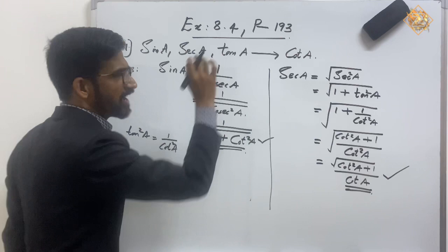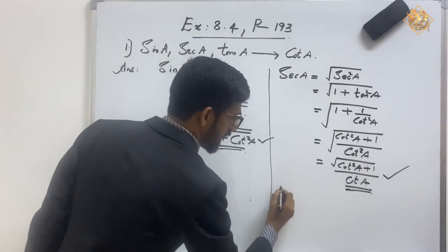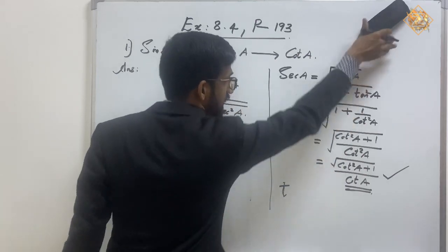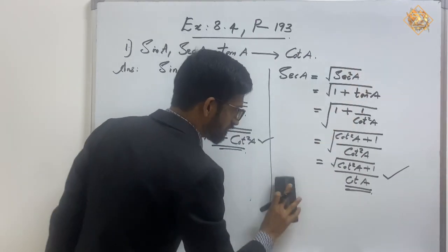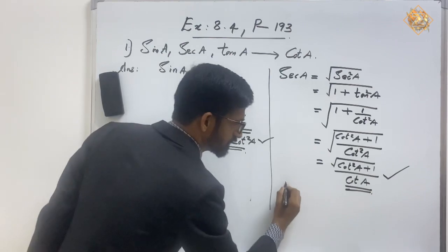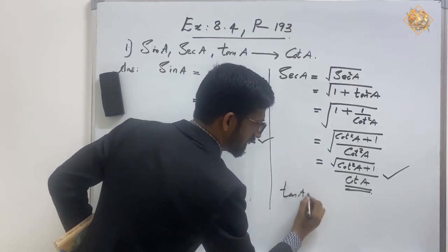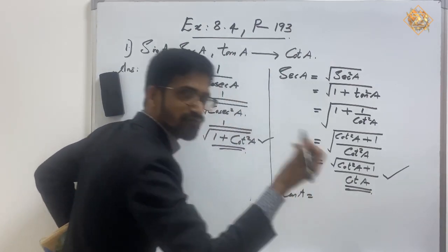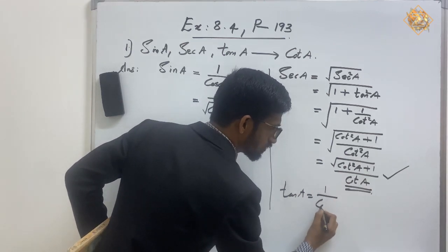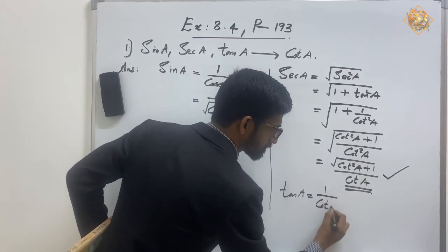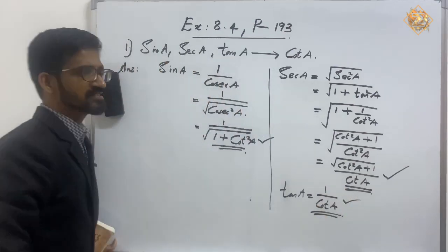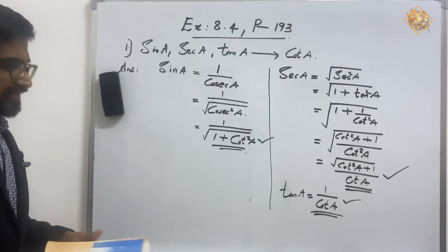One more part: express tan A in terms of cot A. This is very easy. We know tan A is the inverse of cot A, so tan A = 1 by cot A. That's it! Please take it to your notebook — it's an easy question.